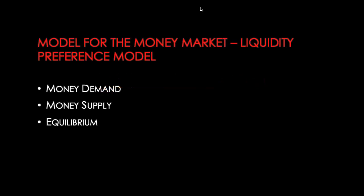Hello everyone, welcome back. Today we're doing monetary policy in our principles of macroeconomics course. This will be an introduction to monetary policy, and we will be looking at a very simple model that describes how the Bank of Canada targets the overnight interest rate — the money market model, or the liquidity preference model. This model primarily says that we hold money as an asset.